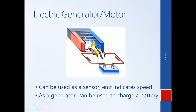It's also worth noting that a generator can be used to charge a battery. So if you want to brake the vehicle — slow it down — you can use the vehicle to turn this generator, thereby slowing the vehicle down and generating electricity at the same time.